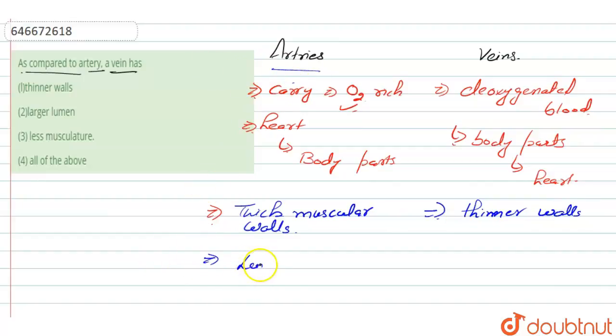The lumen of artery is narrow, whereas the lumen of the vein is not narrow, so we can say that the lumen is larger. Another difference between them is: